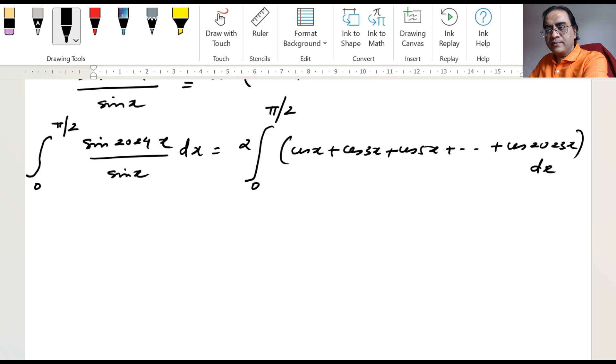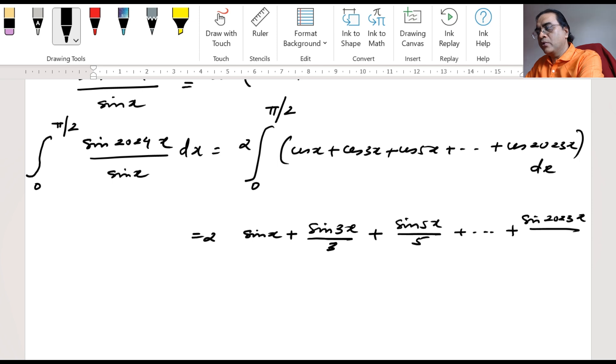So the integral that we want is equal to 2 times sin x, sin 3x by 3, sin 5x by 5, and so on up to sin 2023x by 2023, from 0 to pi by 2.